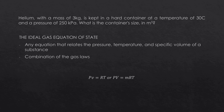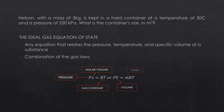Where P is the pressure, V is the volume, M is the molar mass, R is the gas constant, and T is the temperature in Kelvin. Both forms of this equation are equivalent. We use PV equals RT when solving a problem without considering the mass of the gas, and PV equals MRT when we do consider the mass of the gas present.